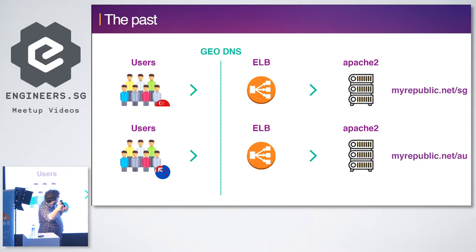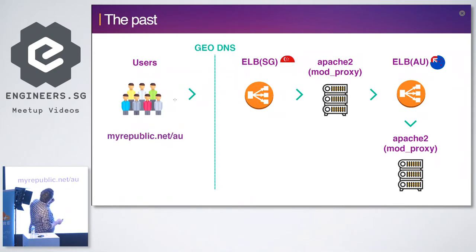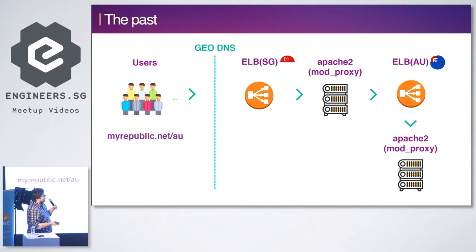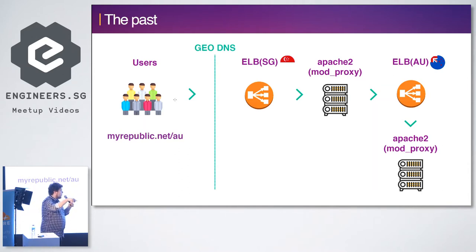So that's the past. The edge case would be that a user from Australia, for example, is traveling to Singapore and still wants to order their fiber broadband internet. So how does this work if my user is in Singapore, goes to my origin in Singapore, and then sees the Singapore website? Our solution was to have mod_proxy implemented, so the user still lands in Singapore, goes to the Apache, which then proxied back to Australia, and the origin in Australia serves the /AU request — not a very pretty solution, but it somehow worked.